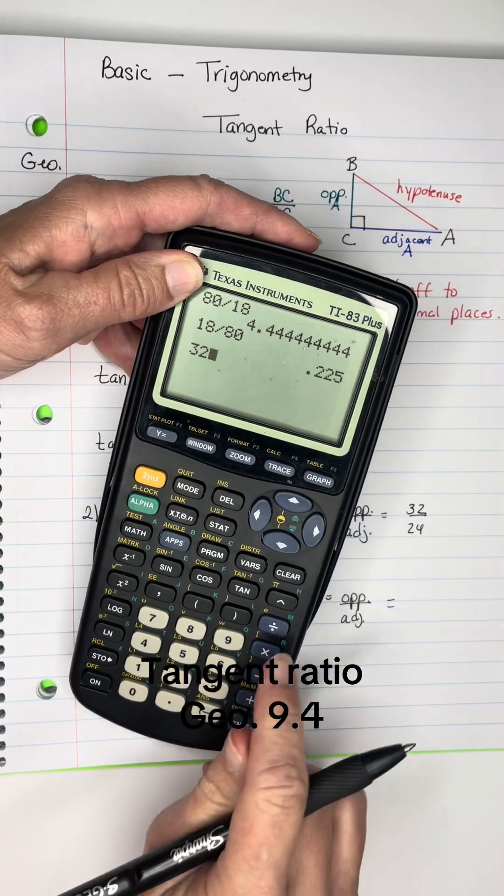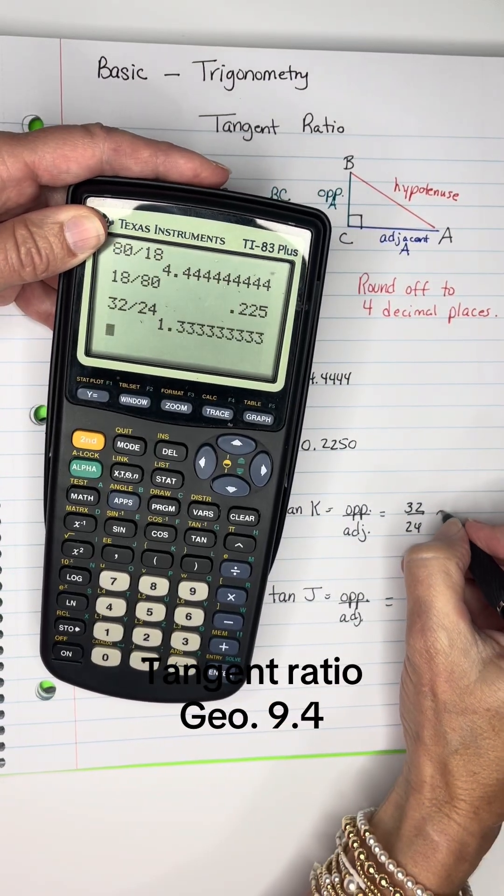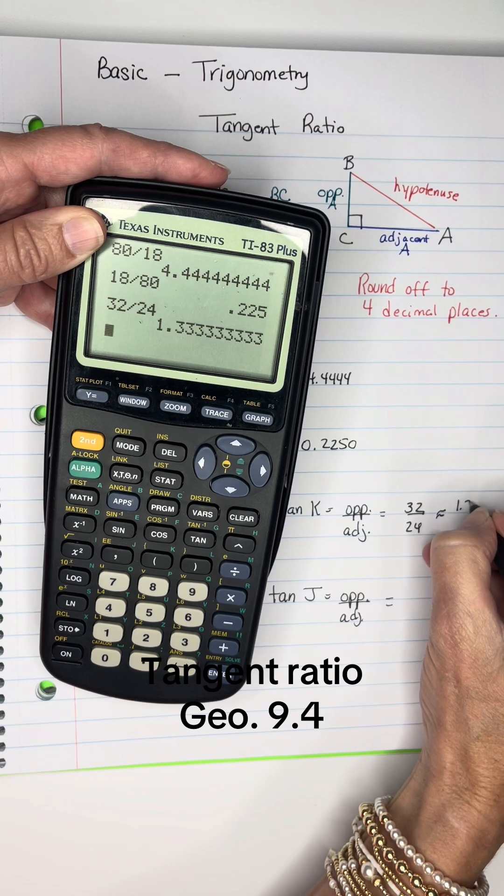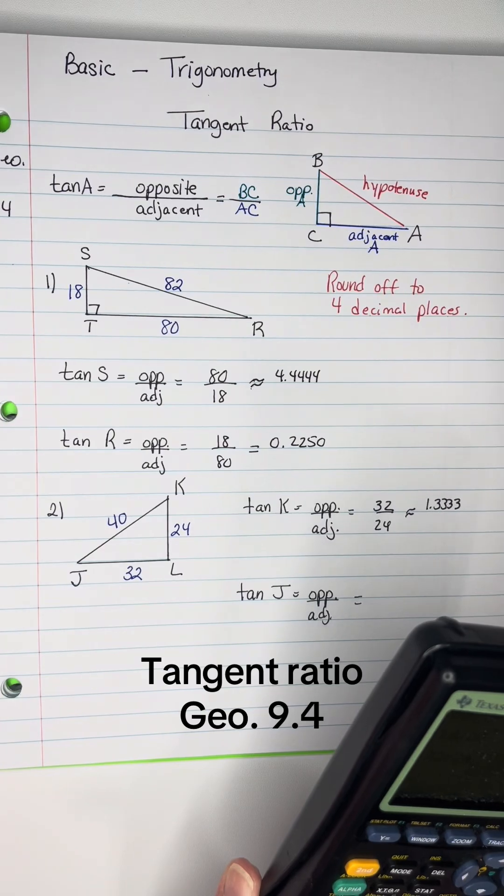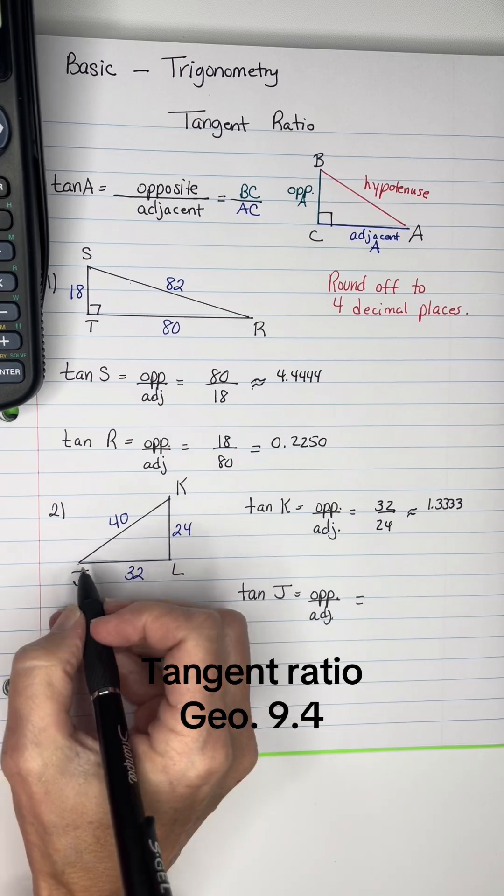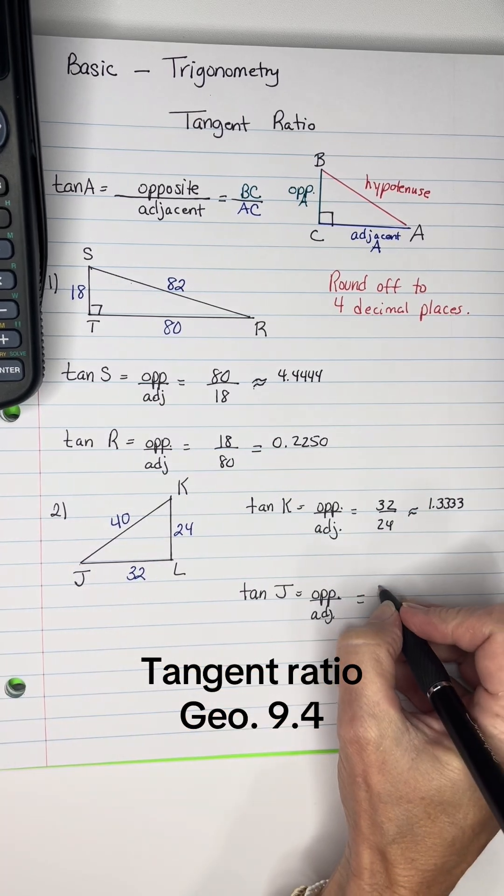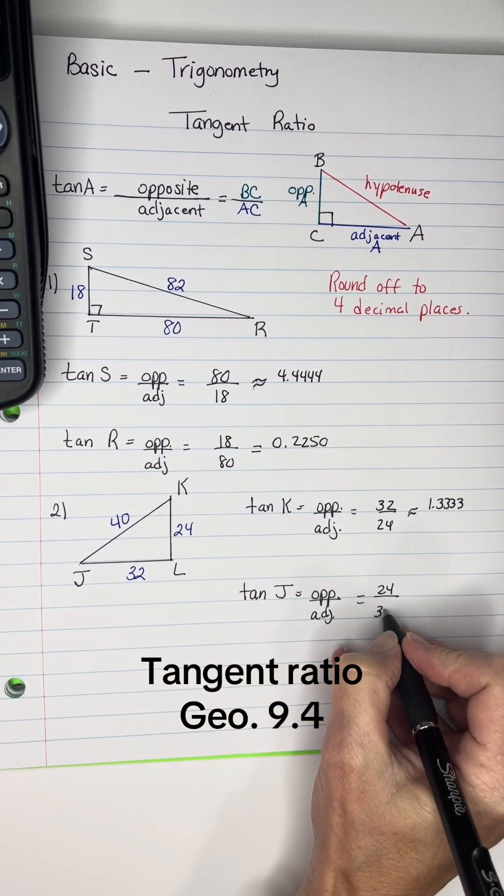32 divided by 24 rounds to 1.3333. Now for tangent of J: the opposite side is 24, and the adjacent—not the hypotenuse—is 32.